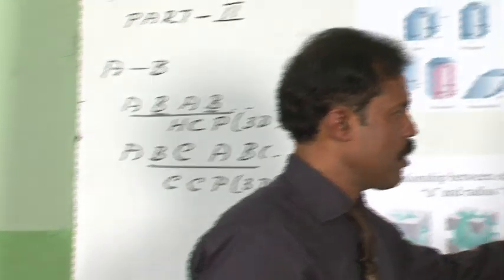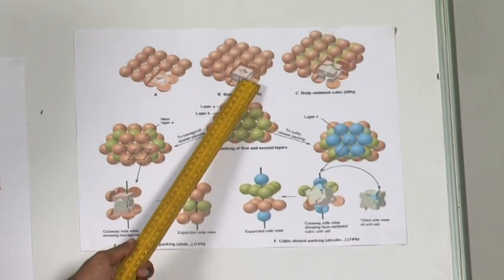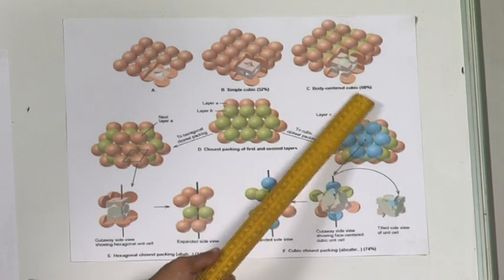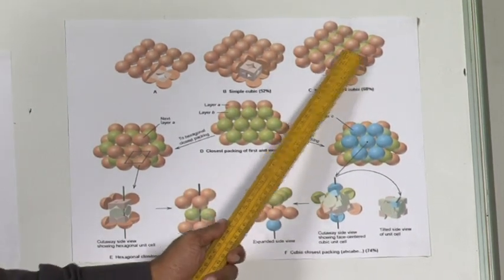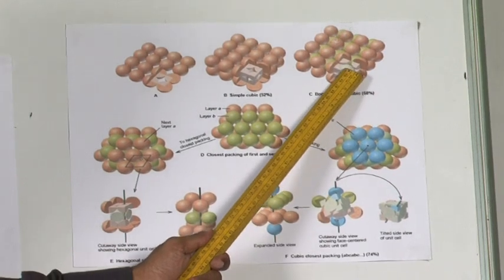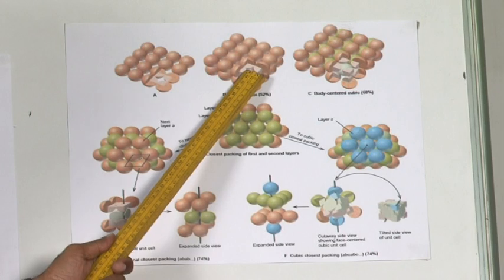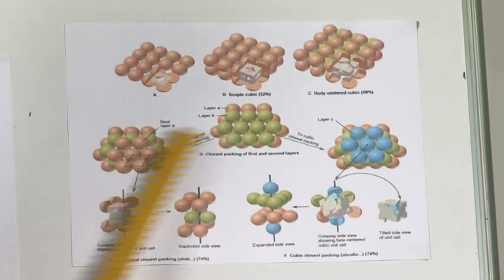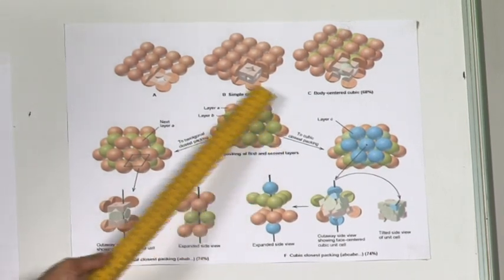The same concept is shown again here. This is the first layer; the body-centered cube is shown, which you studied in the last class. You can see spheres at the corners and one at the center. In another arrangement, there are spheres at the corners but none at the center. These give two kinds of arrangements.